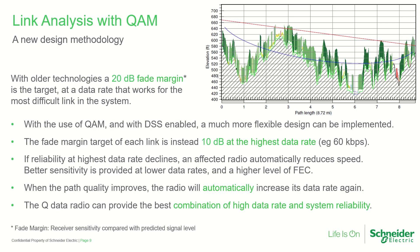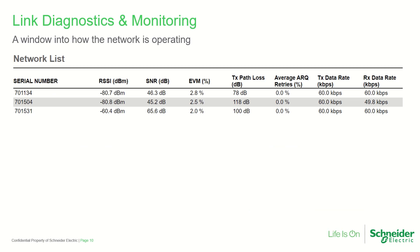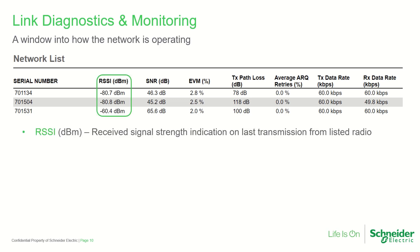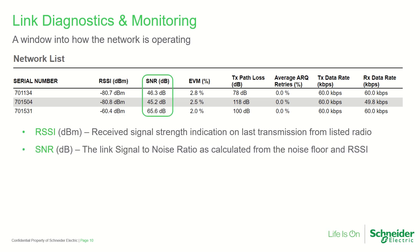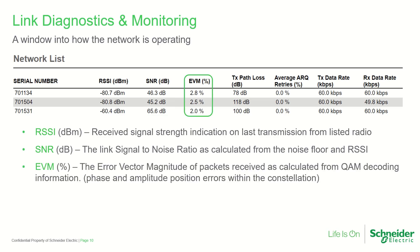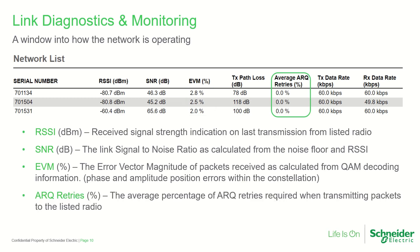By navigating to the monitoring menu and selecting Network List in a TRIO-Q radio, a list of all other radios recently communicated with can be seen. This list includes numerous diagnostic parameters used by the radio when a specific dynamic policy has been chosen. The monitored parameters include received signal strength indication (RSSI) measured during the last transmission, the path signal-to-noise ratio calculated from the noise floor and RSSI by the dynamic beacon master, error vector magnitude of packets received as calculated from QAM decoding information, and the average percentage of ARQ retries required when transmitting to the listed radio.